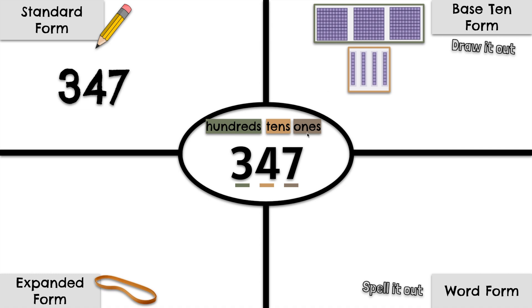Now we need 7 ones: 1, 2, 3, 4, 5, 6, 7. That's 7 ones.